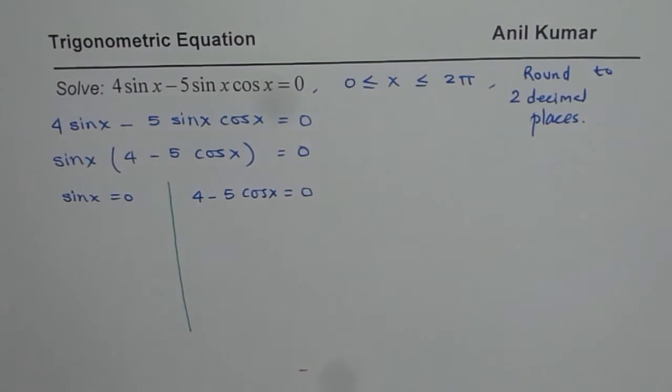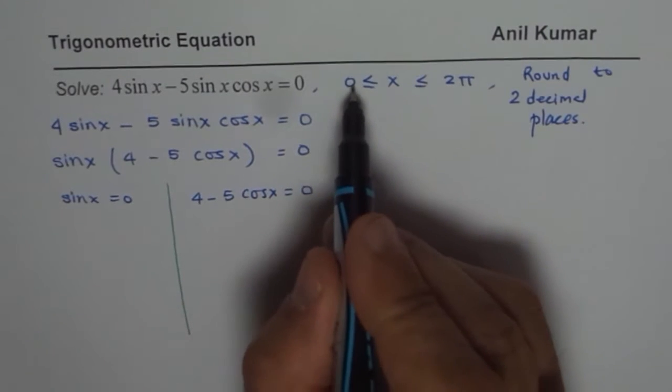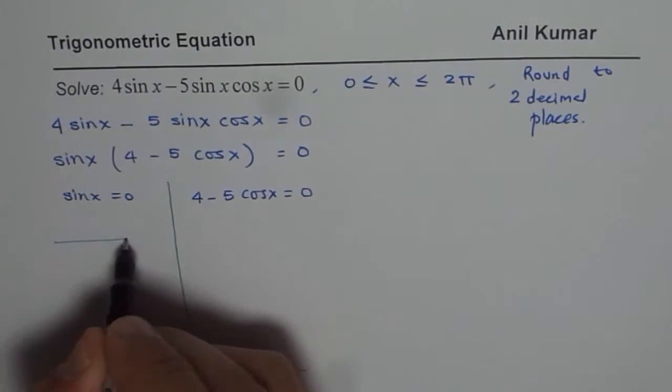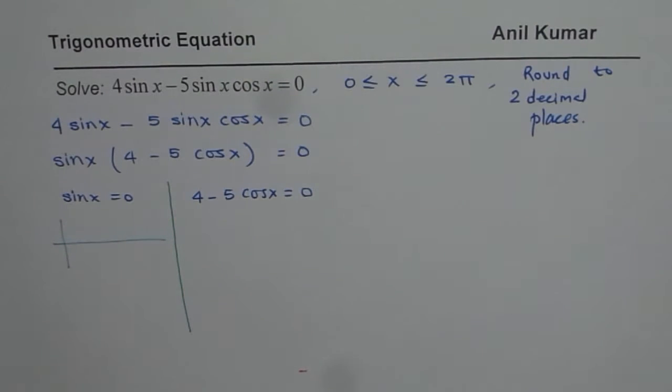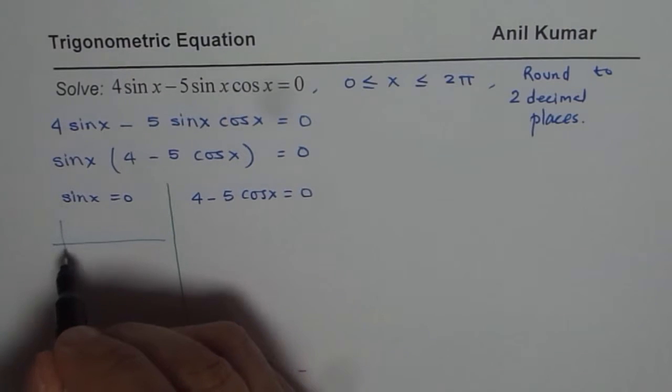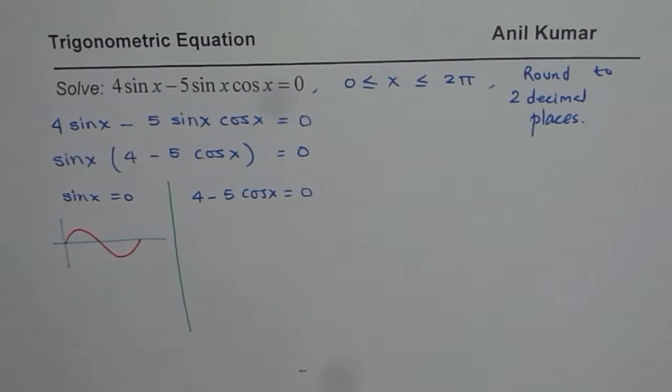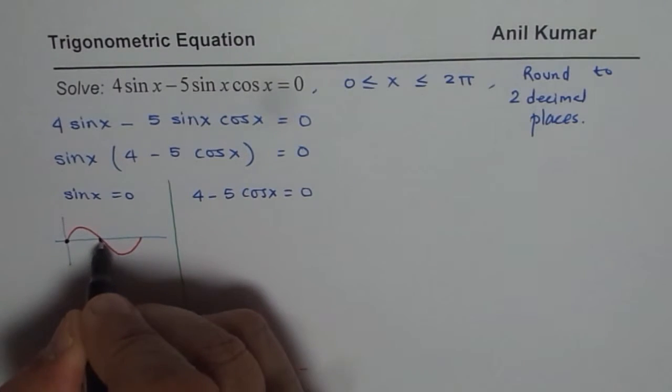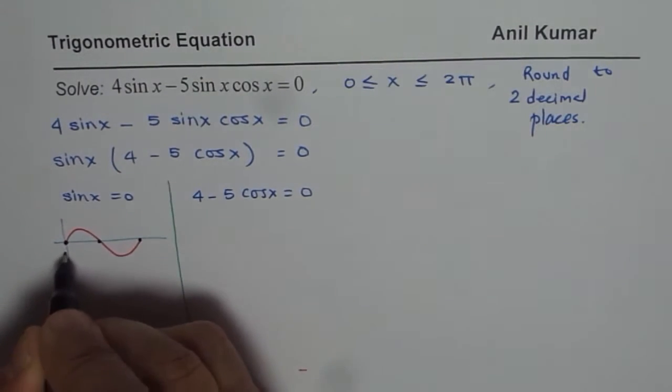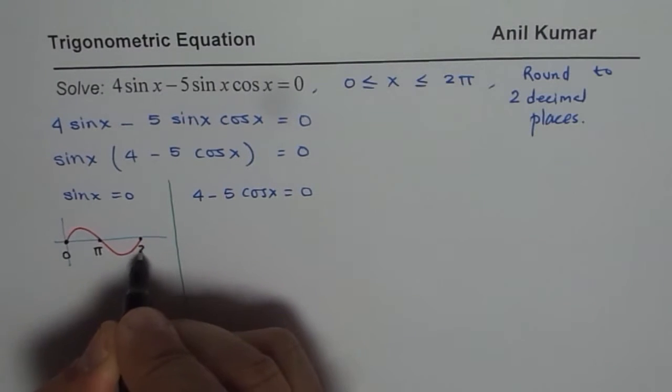Sin x equals to 0 gives you how many solutions? Well sin x equals to 0 within this domain of 0 to 2 pi will give you three solutions. Let me sketch sin x and show you. So these are the three zeros for sin x. They are at 0, pi and 2 pi.